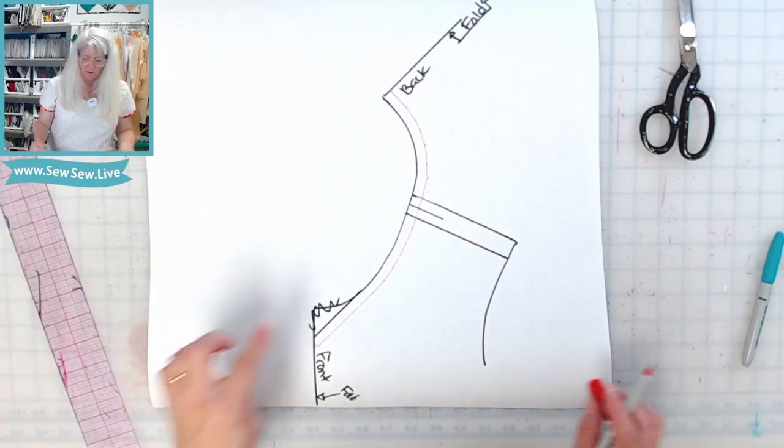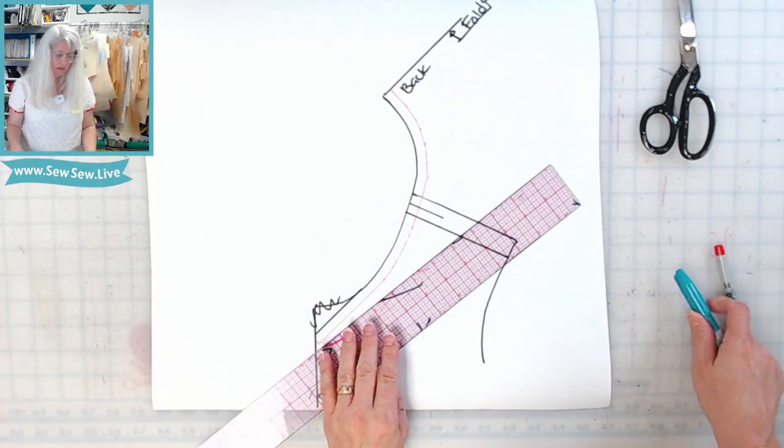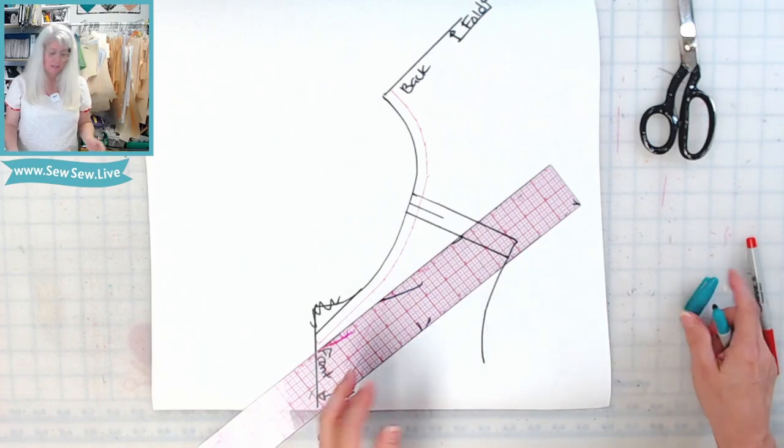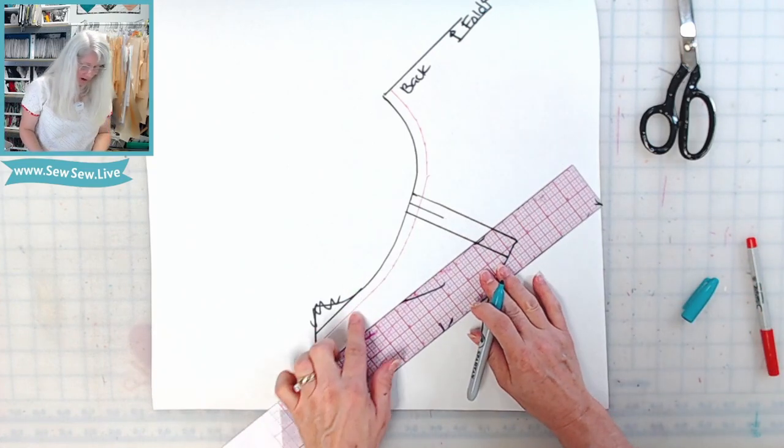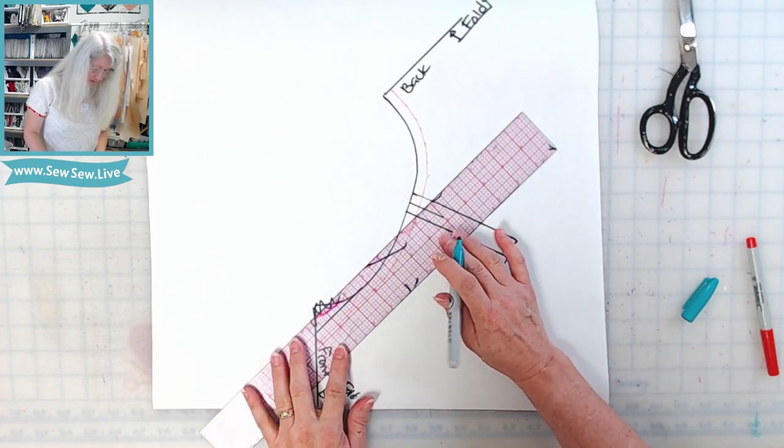Alright, so now I've got my seam line drawn onto the neck here. And so like I said, I'm going to make my neckband about seven-eighths of an inch wide. So I'm going to draw a parallel line to my seam line, to this red line here, the width of my neckband.